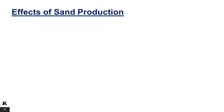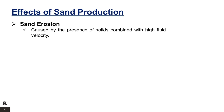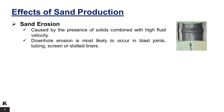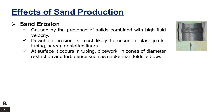Effects of sand production. Operational problems related to sand production vary from expensive sand handling problems to the complete loss of a productive zone, or even the possibility of lost well control due to eroded surface equipment. Sand erosion is caused by the presence of solids combined with high fluid velocity. It can occur in both downhole and surface equipment. Downhole erosion is most likely to occur in blast joints, tubing, screen or slotted liners. At surface it occurs heavily at equipment upstream of the separator, for example in tubing and pipework, in zones of diameter restriction and turbulence such as choke manifolds and elbows.